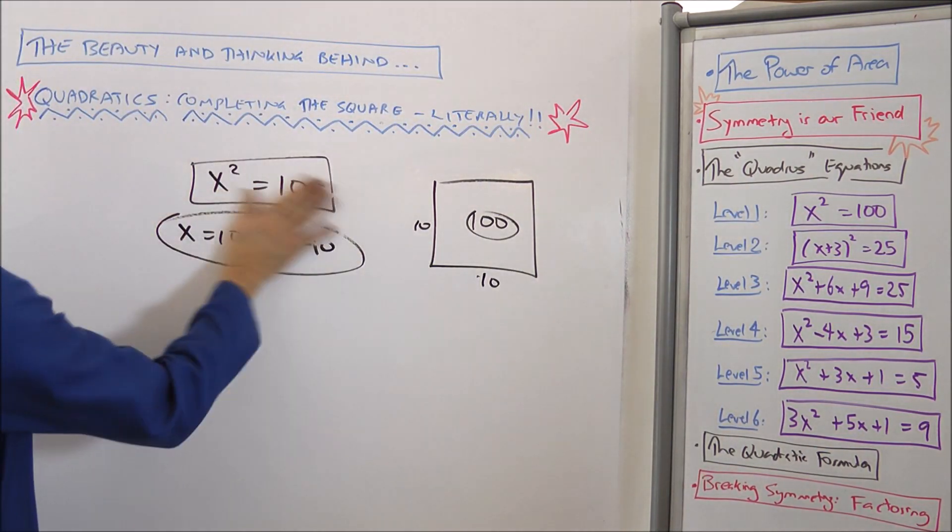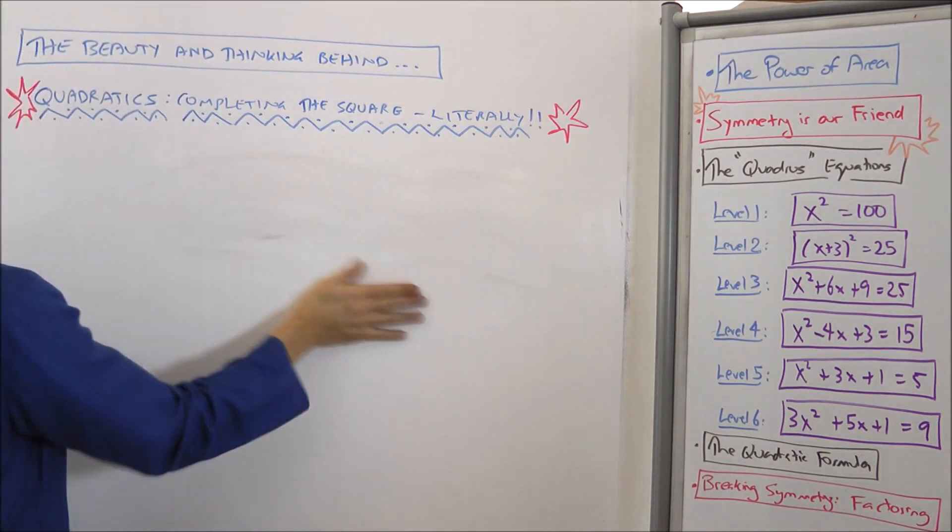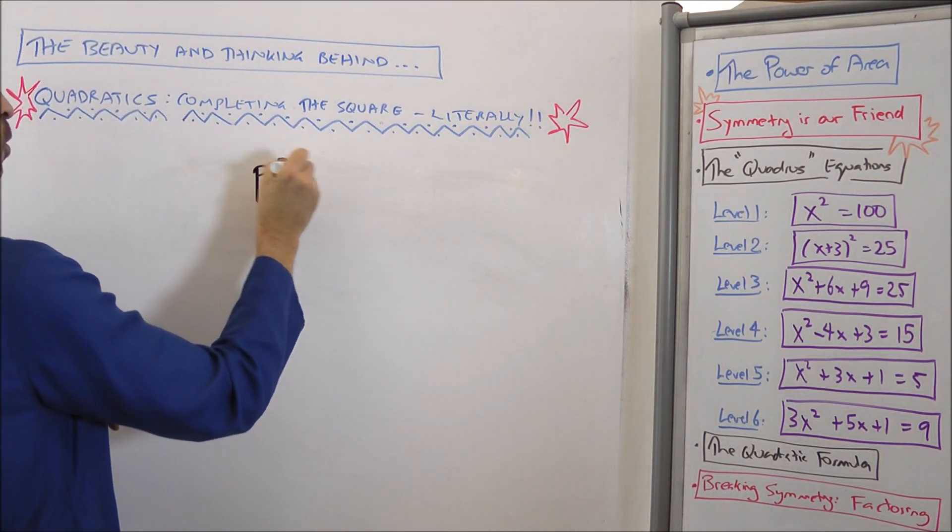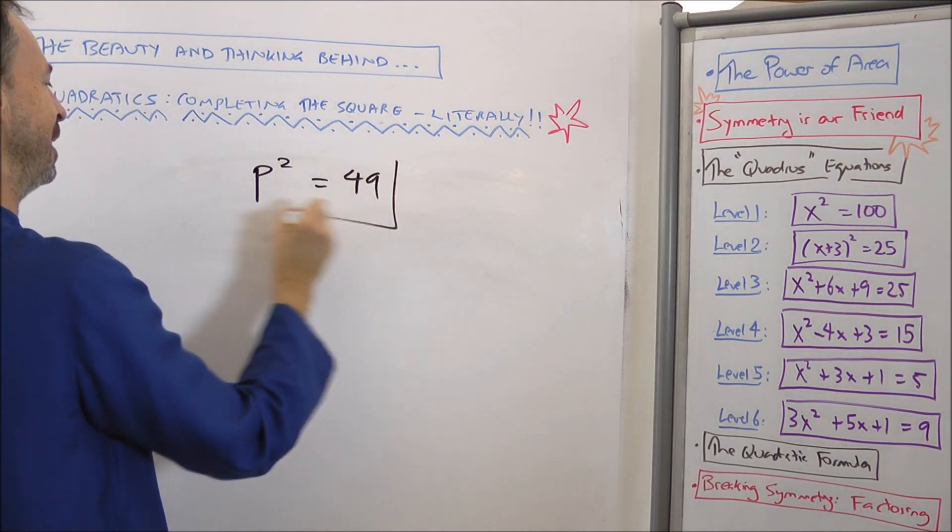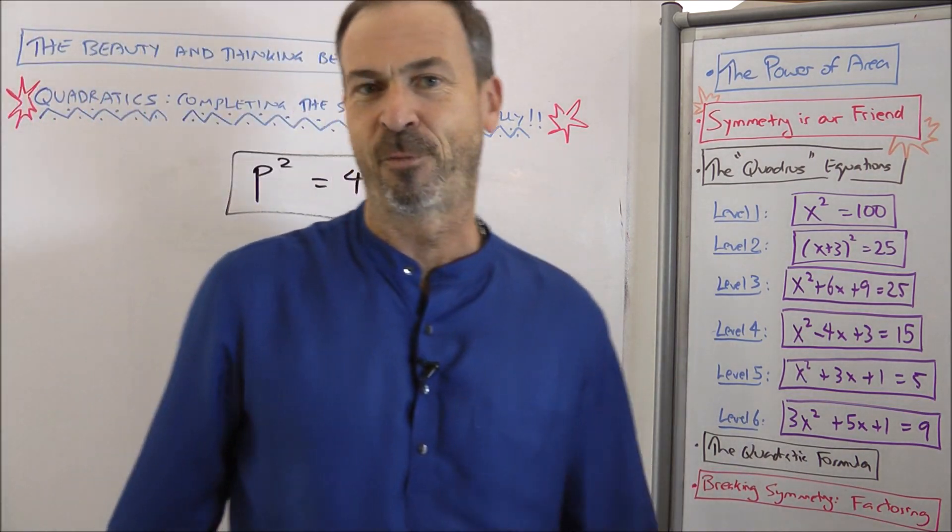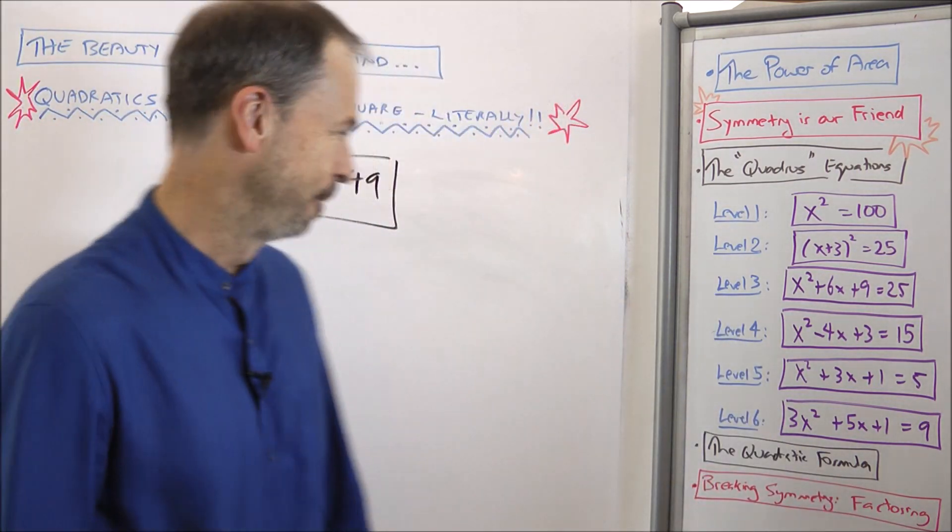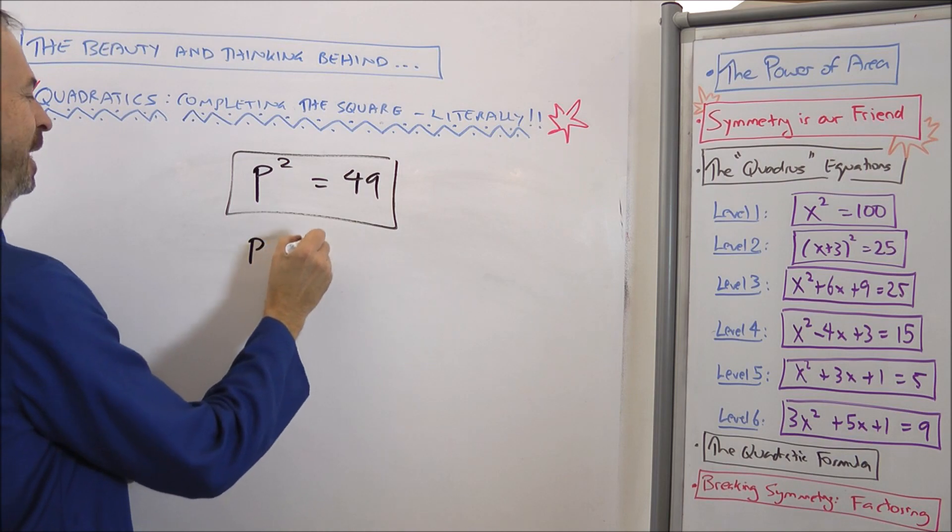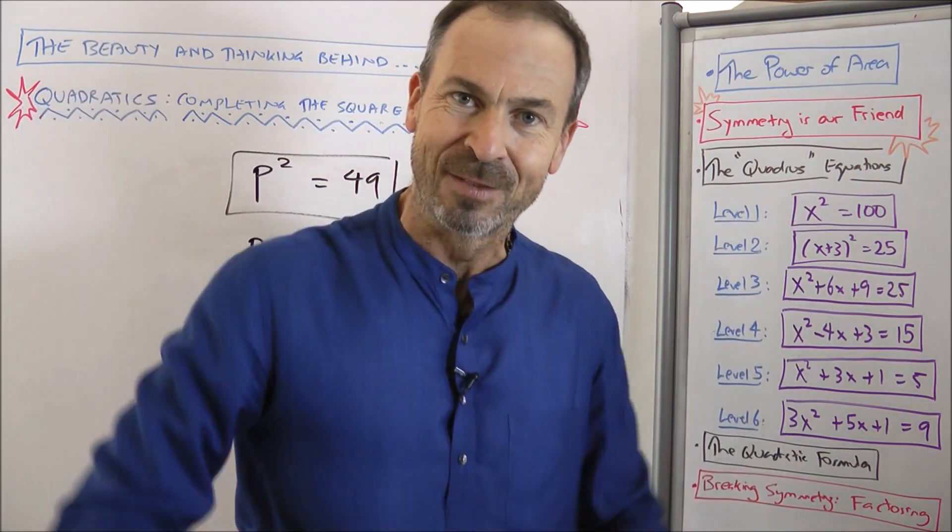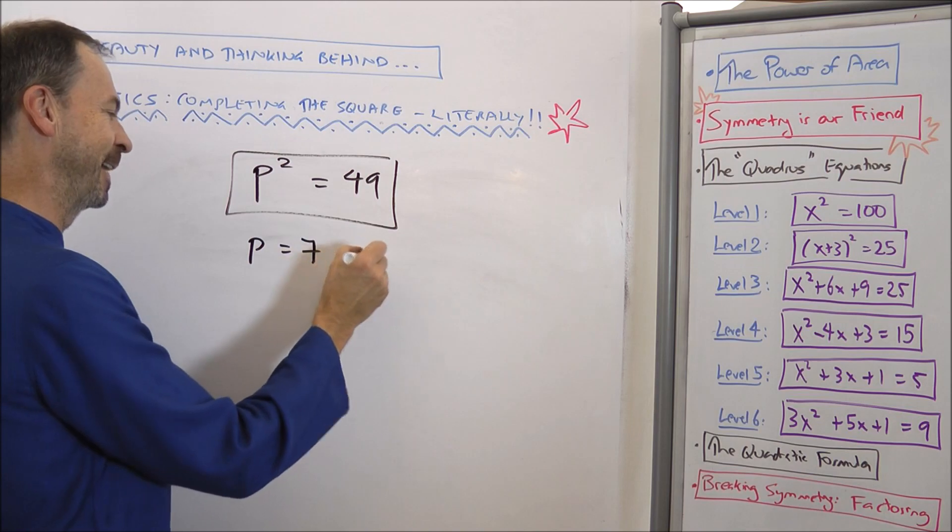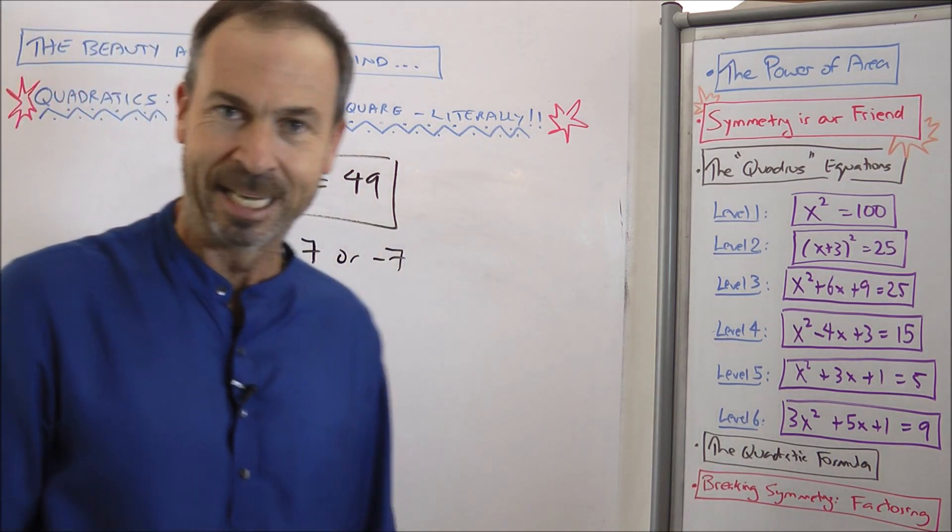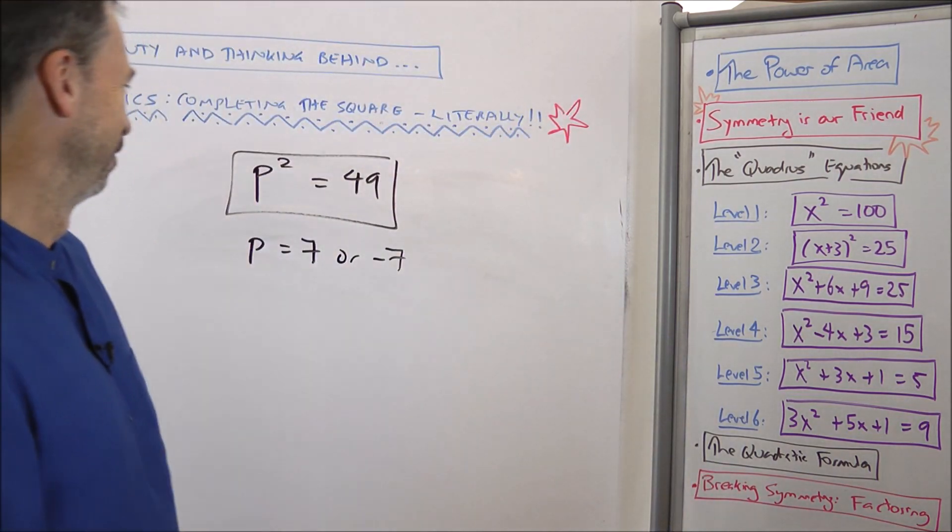In fact, I can whip through some examples with you right now very quickly. For example, if I asked you to please solve this quadris equation, p squared is 49. I called it p instead of x, no big deal. You'd say, p must be 7 from what the literally geometric answer is, a 7 by 7 square. Or in arithmetic, there's a second answer, the negative version, negative 7. p is 7 or negative 7.